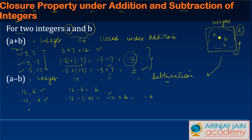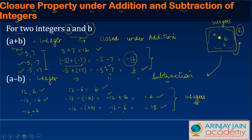Now if we had minus 12 and plus 6, we get minus 12 minus plus 6, which gives minus 12 minus 6. Since the signs are the same, we add them and put a minus sign, giving minus 18. In all three cases — 6, minus 6, and minus 18 — all three are integers. So we say that the integers are closed under subtraction.